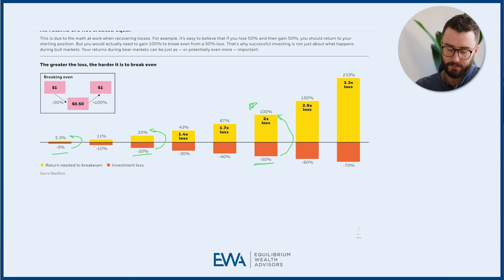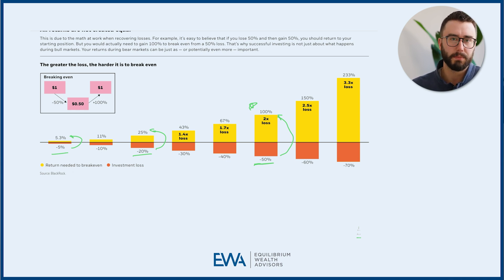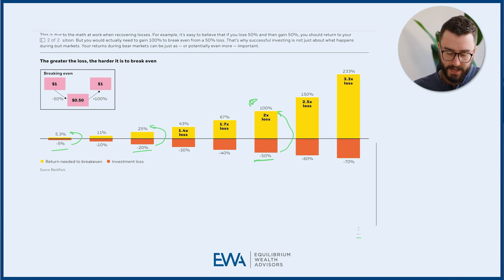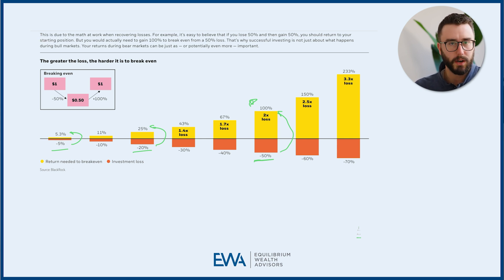If we start with $100,000 and go down 50% and then back up 50%, most people would say we're back at $100,000 — because we went down 50 and up 50. But in that example, if we go down 50%, our future returns are now working off of a lower number, so we need that much more to get back to even.